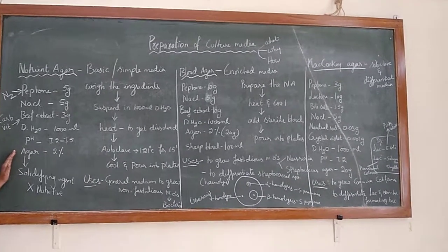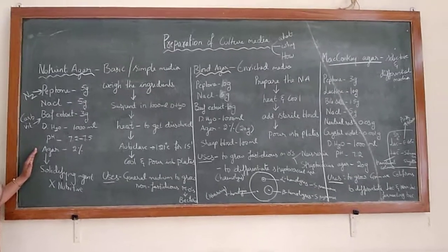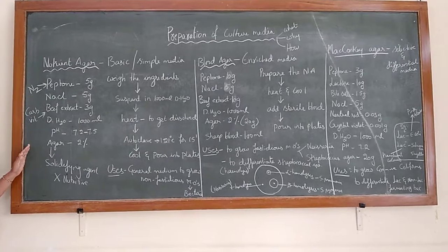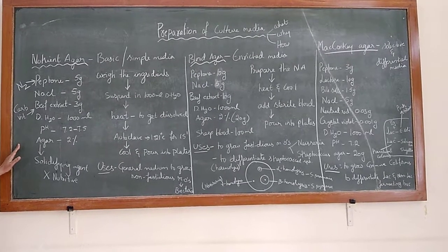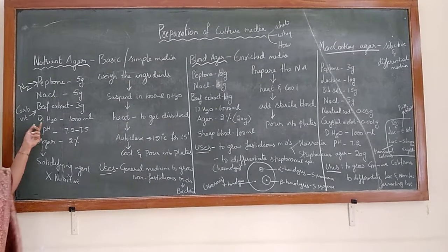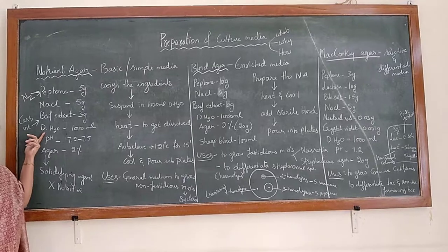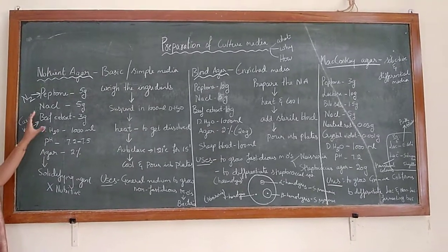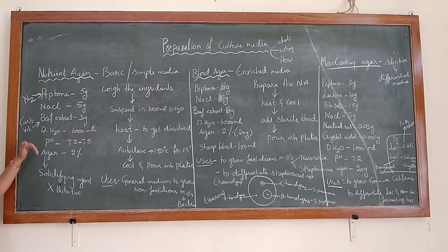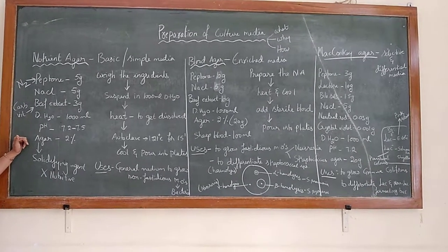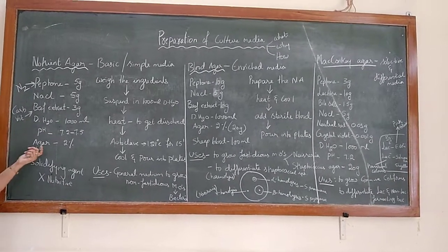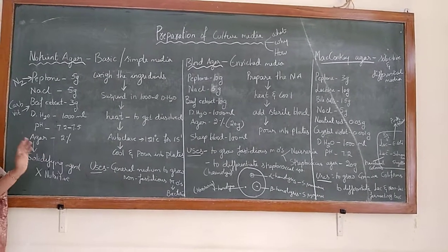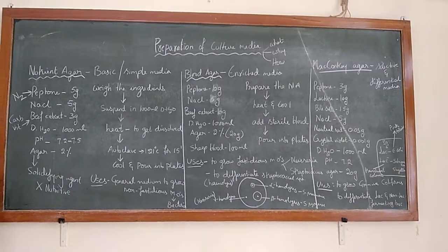Agar agar has been extracted from seaweed or red algae. Distilled water is used so that all the components get dissolved in it. Agar is usually used at two percent — two grams per 100 ml, or you can calculate accordingly.